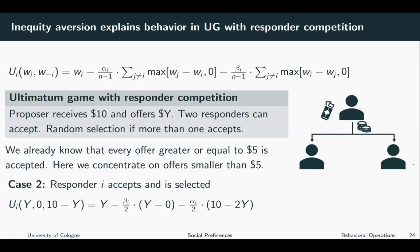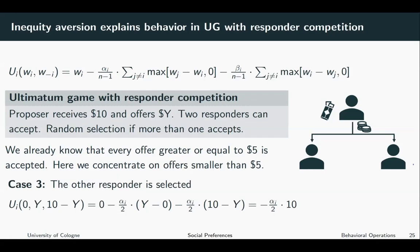The second case is where responder I accepts the offer and is selected. Plugging in the numbers into the utility function, responder I receives a payment of Y, the other responder receives zero, and the proposer receives 10 minus Y. Responder I is better off than the other responder, weighted by beta I, and is worse off than the proposer when Y is less than 5, weighted by alpha I.